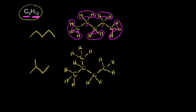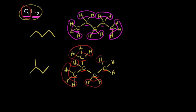Let's count up our atoms. We have five carbons, so that's C5. For hydrogens: three plus three is six, plus one is seven, plus two is nine, and three more for a total of 12. So C5H12 is the molecular formula for this compound. These two drawings represent two different molecules — both have the molecular formula C5H12 but differ in how those atoms are connected. They differ in their structure, so we call them structural isomers of each other.